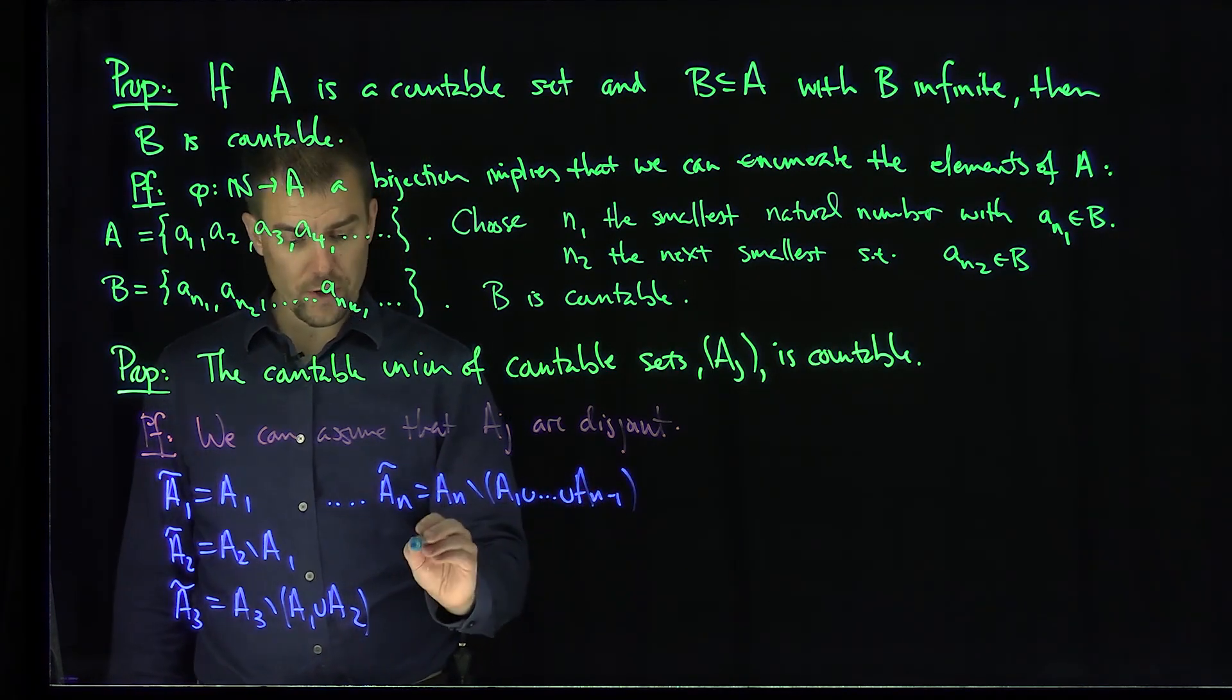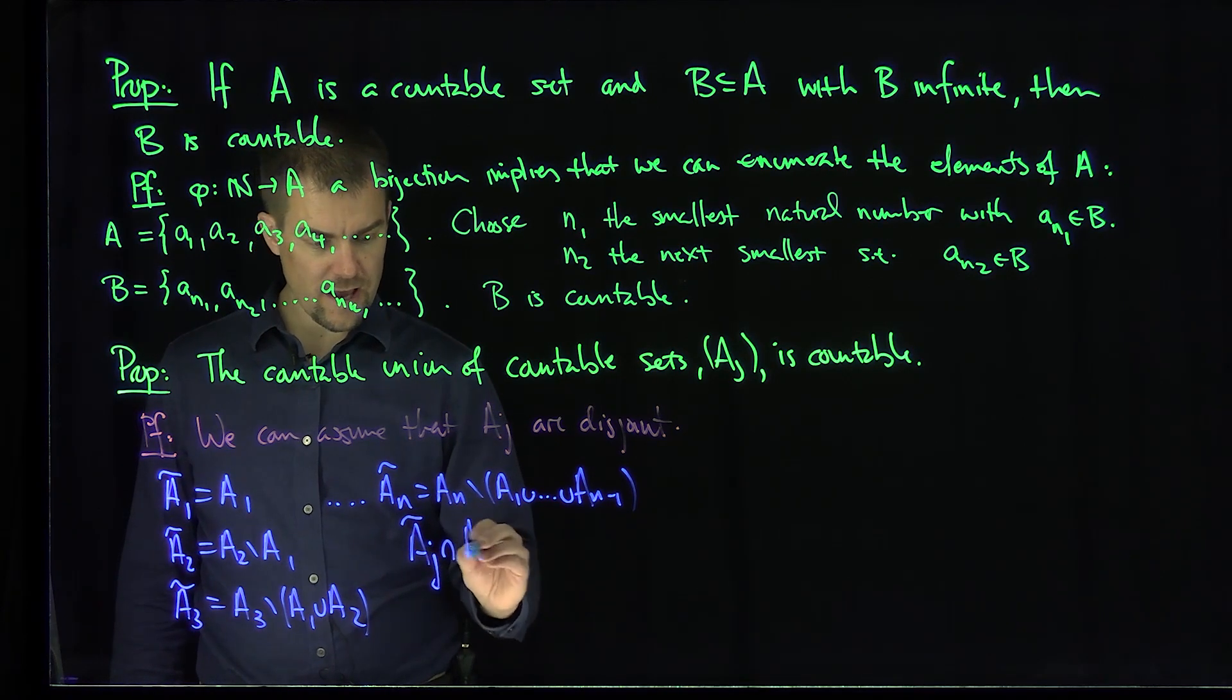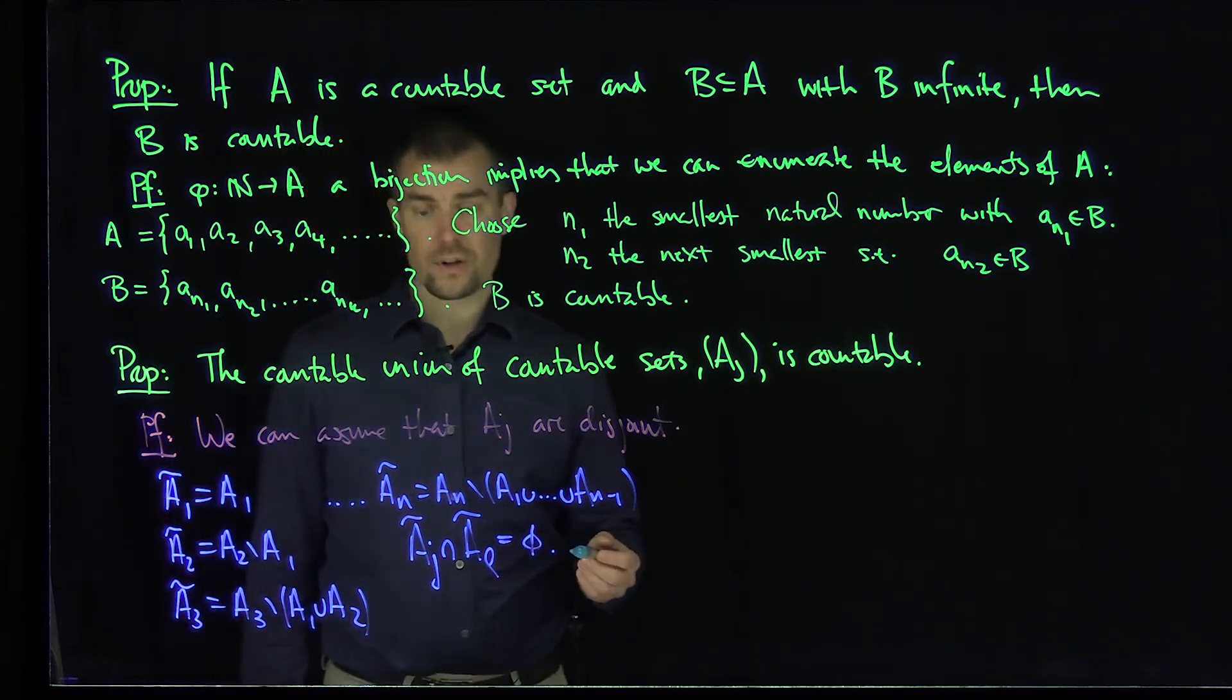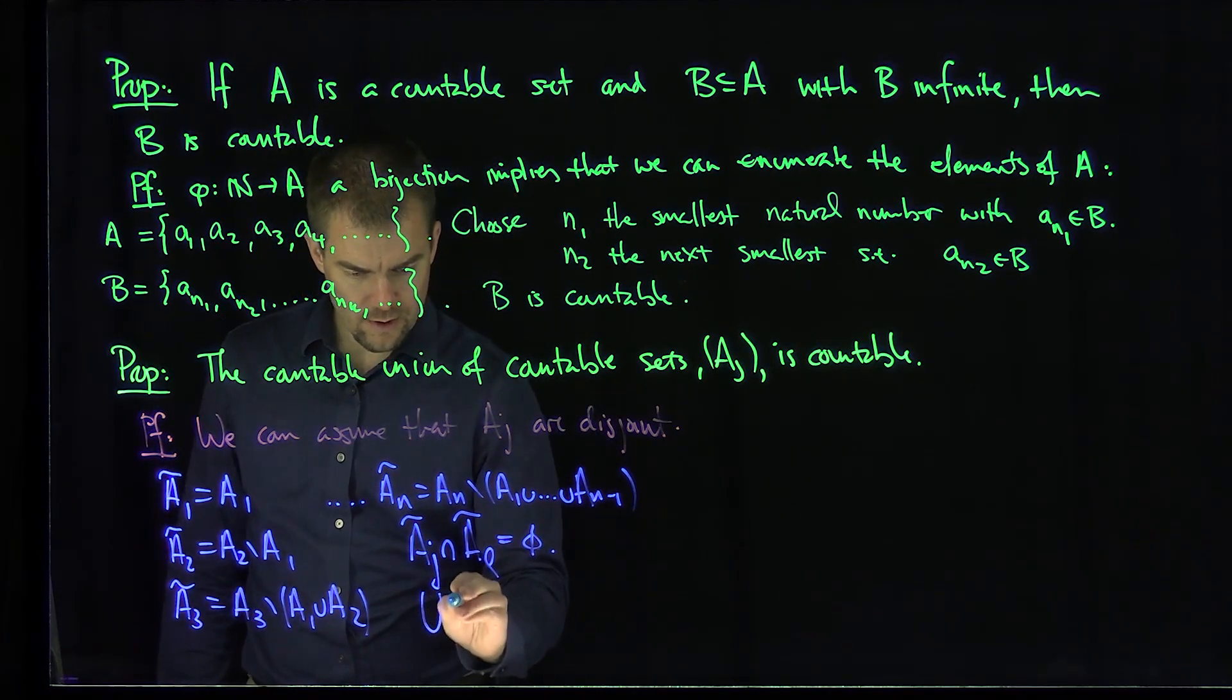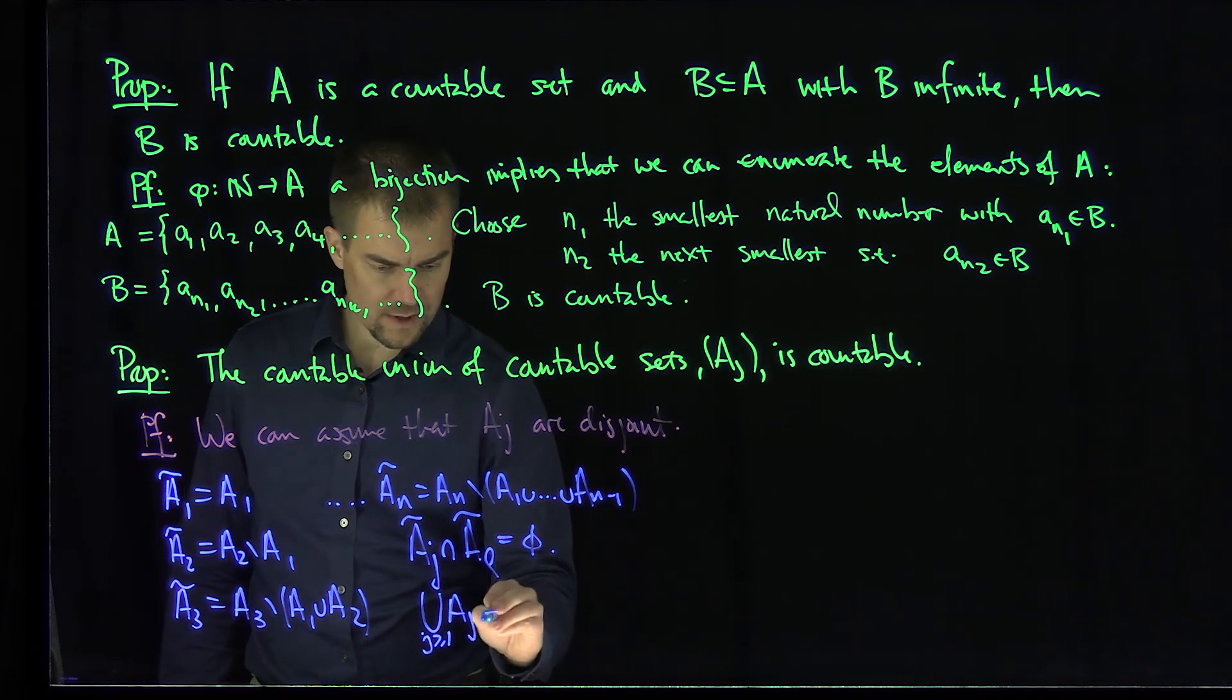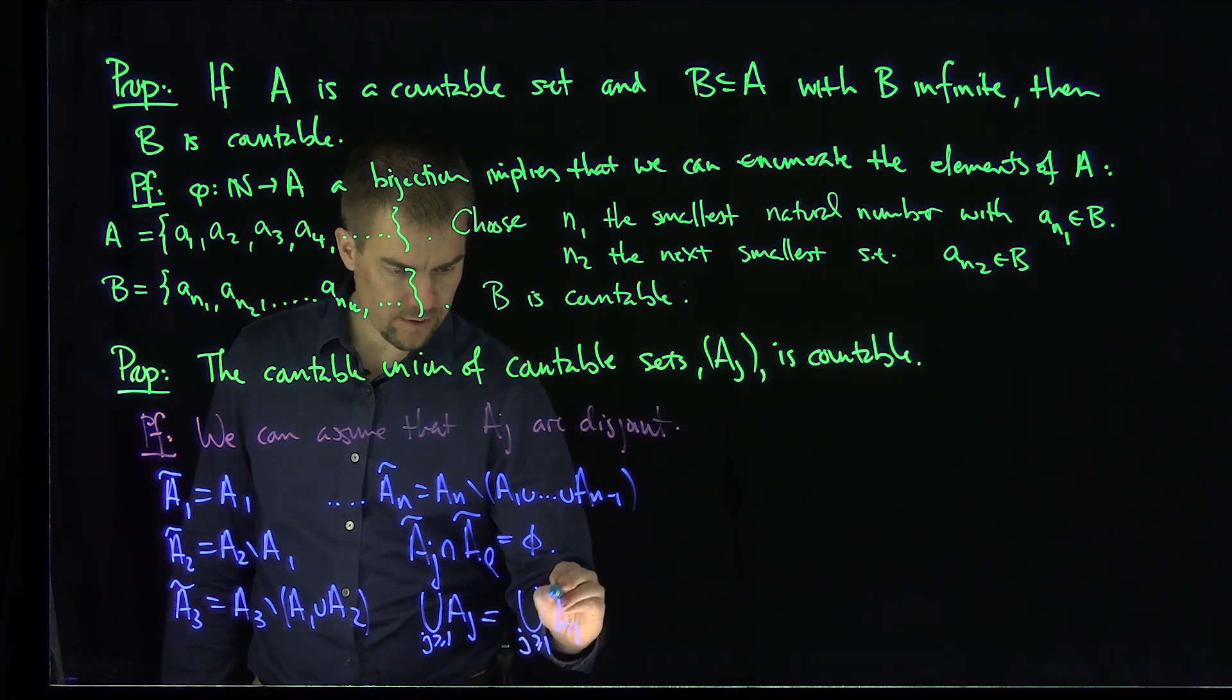So these sets are disjoint. So A_J tilde intersect A_L tilde is empty. And the union of the A_J's, J greater than or equal to 1, is equal to the union J greater than or equal to 1 of the A_J tilde.